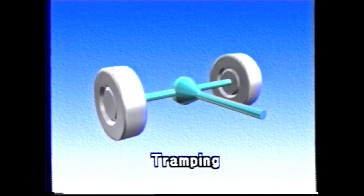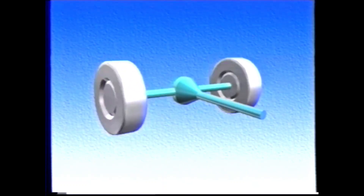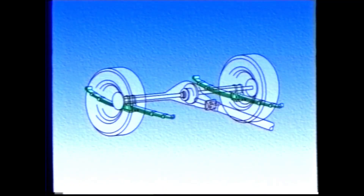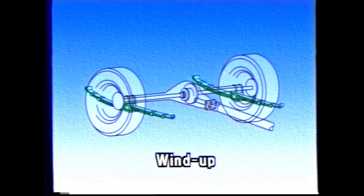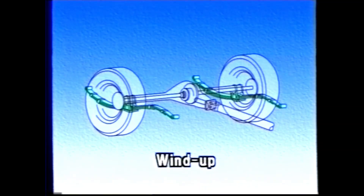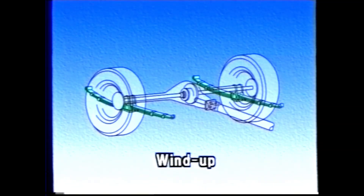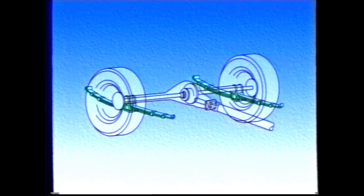Tramping is most common in vehicles with rigid axle suspension. Wind-up occurs in vehicles with leaf spring suspension — the leaf springs attempt to wind themselves around the axle due to acceleration and braking torque, and the springs' flexure changes at the front and back, causing jolting. A number of features can be implemented in suspension systems to suppress this jolting.